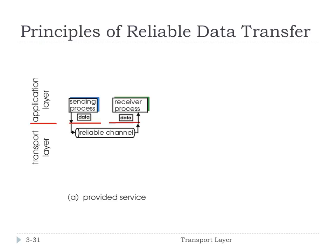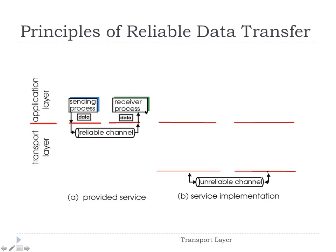At a high level, the application layer has a sending process and a receiving process. To them, they know that they send data and it's moved over a reliable channel and delivered to the receiver process — the same piece of data that was sent. The transport layer has the job of implementing this protocol to create a reliable channel. In actuality, we have to send the data over an unreliable channel. So how do we get reliability over an unreliable channel? That's the basic question of this whole section.